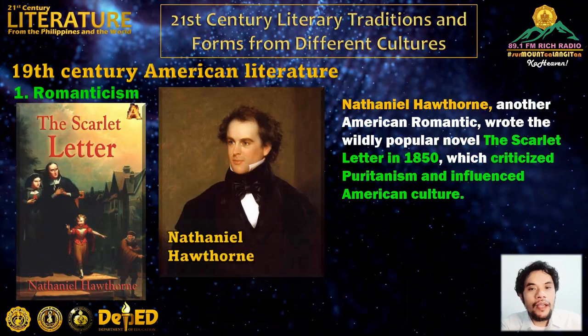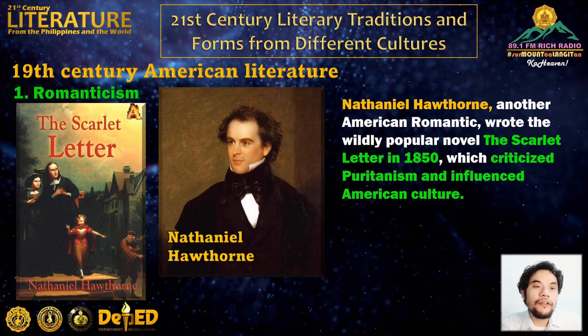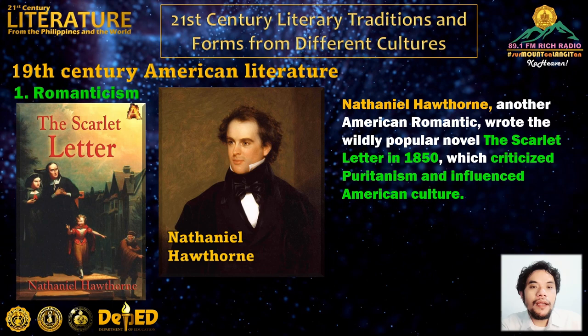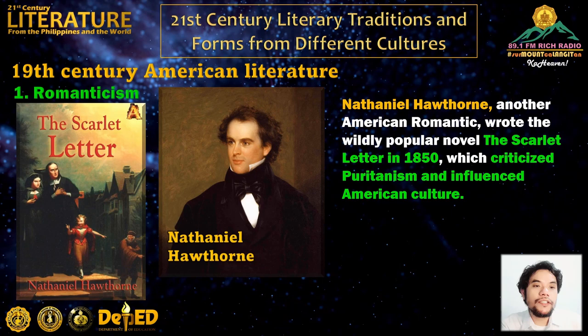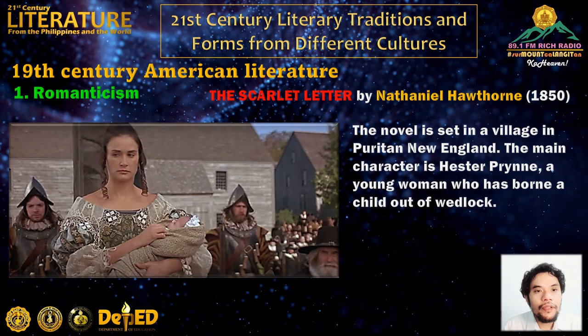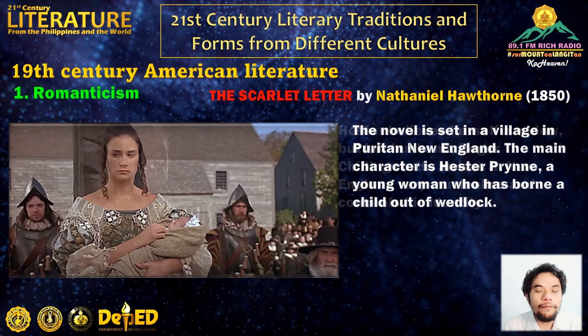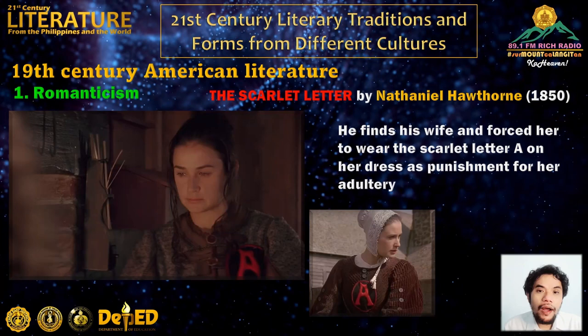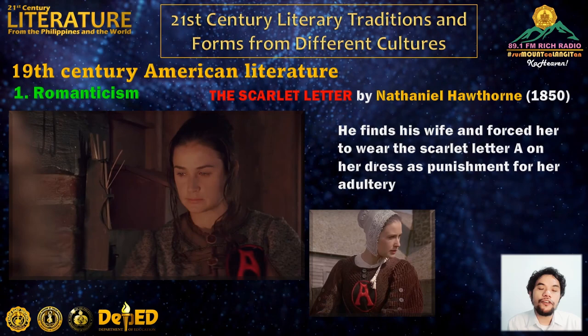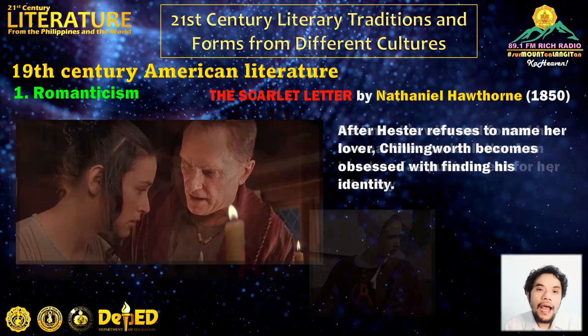Nathaniel Hawthorne, another American Romantic, wrote the wildly popular novel The Scarlet Letter in 1850, which criticized Puritanism. The idea of sin and punishment is the main theme. The novel is set in a Puritan New England village. The main character, Hester Prynne, is a young woman who has borne a child out of wedlock. Her husband Roger Chillingworth arrives alive, conceals his identity, and forces her to wear the scarlet letter A on her dress as punishment for adultery. After Hester refuses to name her lover, Chillingworth becomes obsessed with finding his identity.